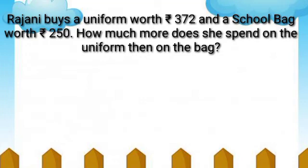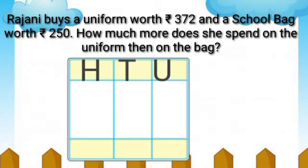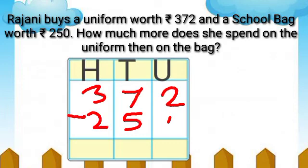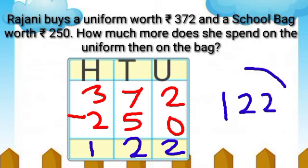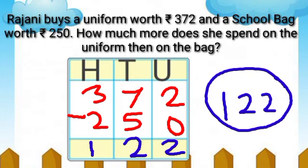Let's form the example: 372 minus 250 is equal to 122. So Rajni spent Rs. 122 more on the uniform than on the bag.